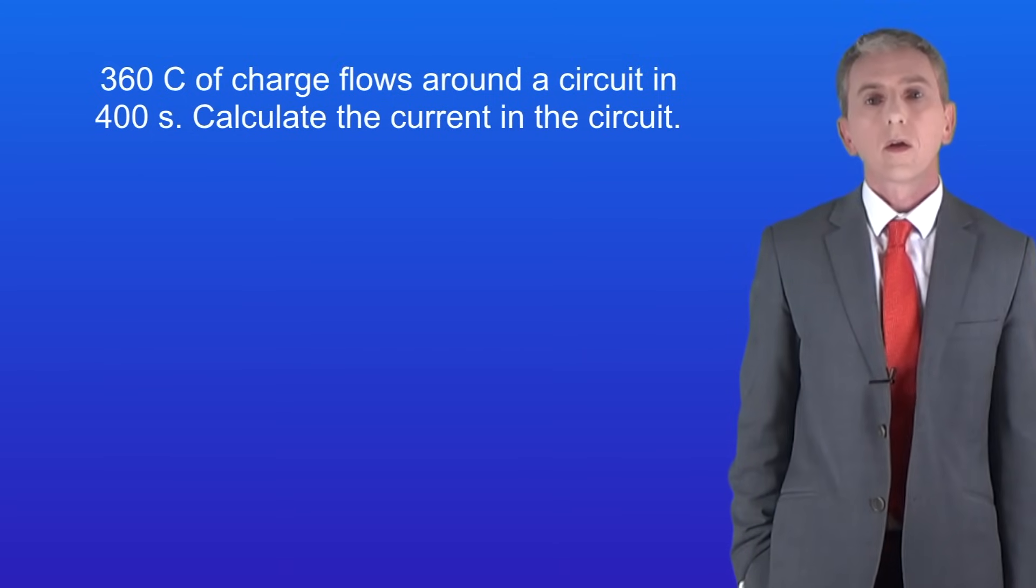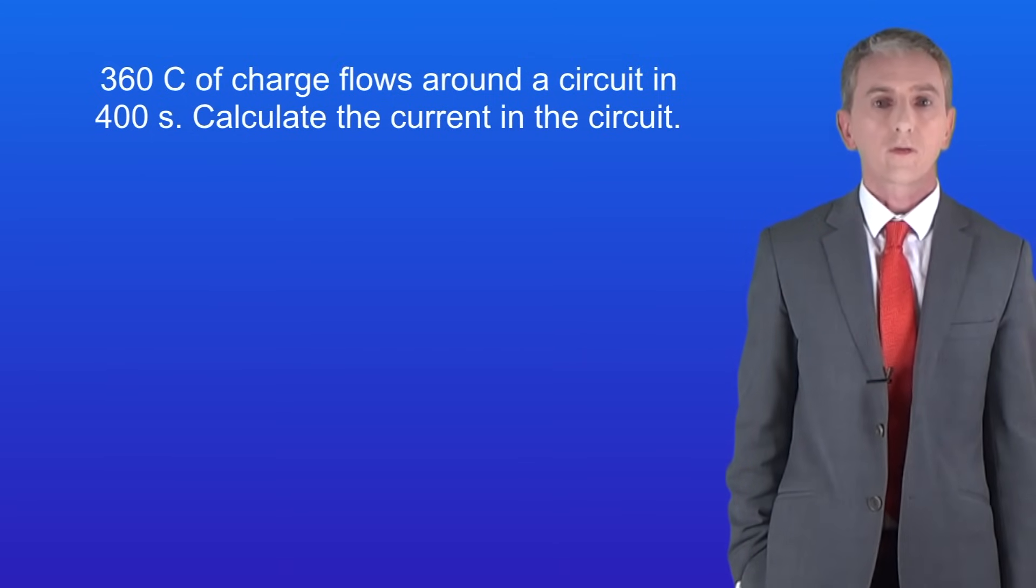Here's another question for you. 360 coulombs of charge flows around a circuit in 400 seconds. Calculate the current in the circuit. Now to answer this question you'll need to rearrange the equation to calculate the current. So pause the video now and try this yourself.